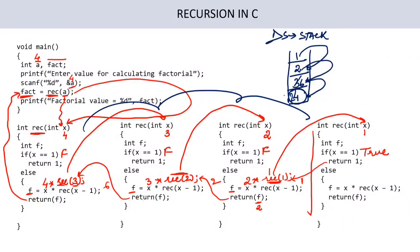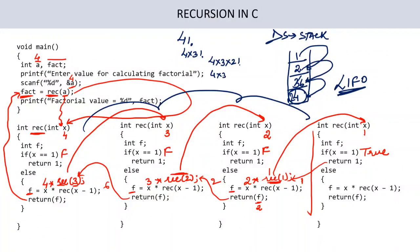So this was all about recursion — how recursion takes place. When I called factorial of 4: first 4×3! is called, then 4×3×2!, then 4×3×2×1!. Since 1! = 1, we move back, multiplying intermediate values to finally get 24. Always remember: when recursion takes place, a stack data structure is maintained. This was how to find factorial of a number using recursion.